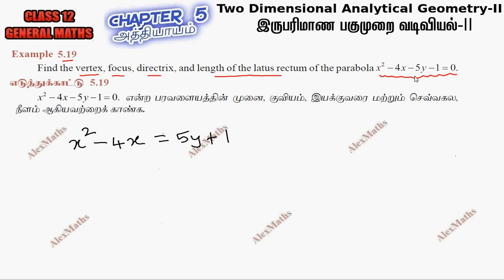Now we apply completing the square. In the procedure of completing the square, x squared is here, which means x times x. The sign is minus, so the number here is 2. The whole square is formed, and this square is subtracted. Here, 2 squared is 4.